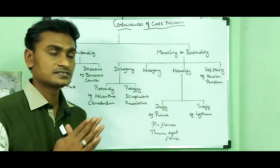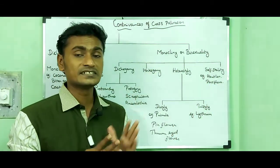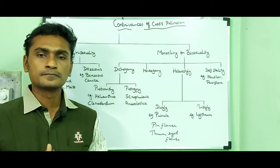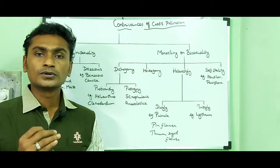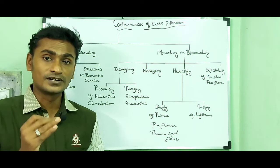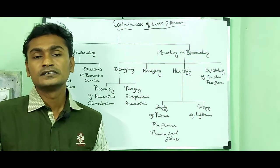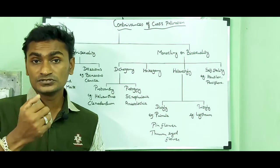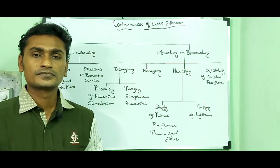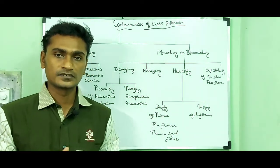The final adaptation is self-sterility or self-incompatibility. In some plants, even when the pollen grains of a flower reach the stigma of the same flower, they are unable to germinate on their own stigma. That condition is called self-sterility or self-incompatibility.